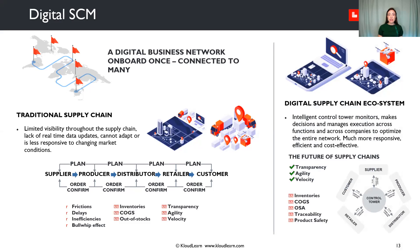Digital supply chain management: a digital business network onboards once and is connected to many. The traditional supply chain has limited visibility throughout the supply chain, a lack of real-time data updates, and cannot adapt or is less responsive to changing market conditions. On the other hand, the digital supply chain ecosystem has intelligent control tower monitors, makes decisions, and manages execution across functions and across companies to optimize the entire network. It's much more responsive, efficient, and cost-effective. The future of supply chains is going to focus on transparency, agility, and velocity.